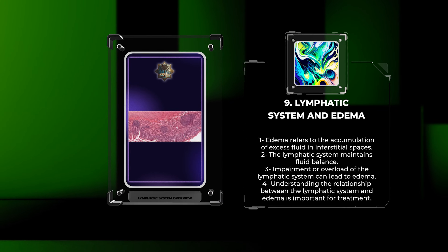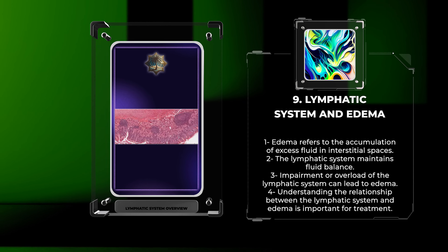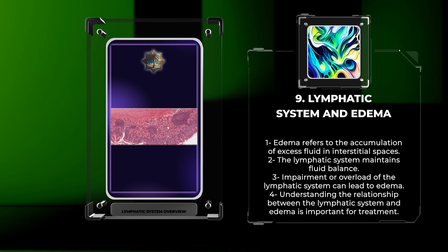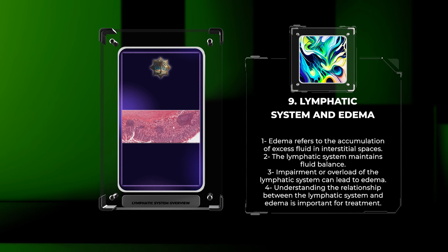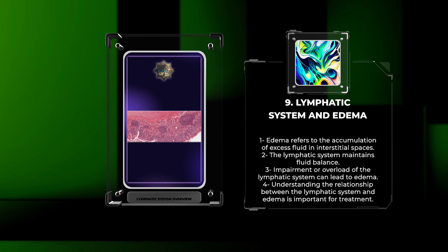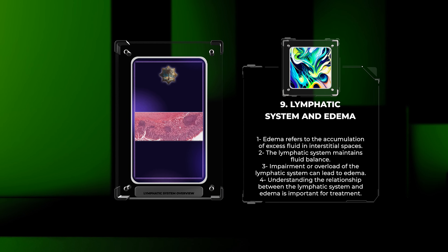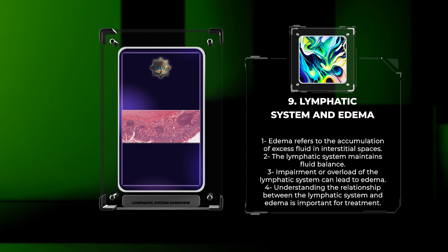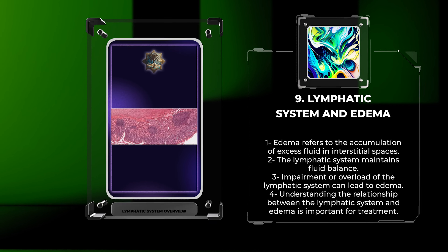Edema refers to the accumulation of excess fluid in the interstitial spaces, leading to tissue swelling. The lymphatic system plays a vital role in maintaining fluid balance by draining excess interstitial fluid. When the lymphatic system becomes impaired or overloaded — such as in lymphedema or infection — its ability to remove fluid is compromised, resulting in edema. Understanding the intricate relationship between the lymphatic system and edema is crucial for effective management and treatment of these conditions.